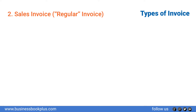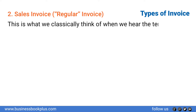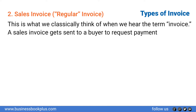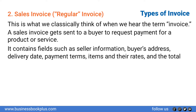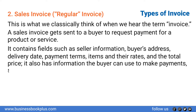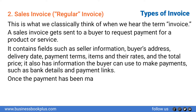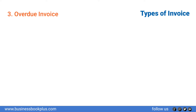Number two, sales invoice or regular invoice: this is what we classically think of when we hear the term invoice. A sales invoice is sent to a buyer to request payment for a product or service. It contains fields such as seller information, buyer's address, delivery date, payment terms, items and their rates, and the total price. It also has information the buyer can use to make payments, such as bank details and payment links. Once payment has been made, the invoice acts as a legal record of the transaction.